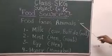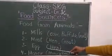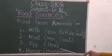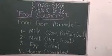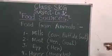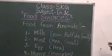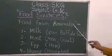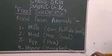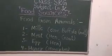Food from animals: milk, meat, egg and honey. Ok students, write in your notebook and do the practice — food from animals and food from plants. Learn it: milk, meat, egg and honey. Ok students, write in your notebook.